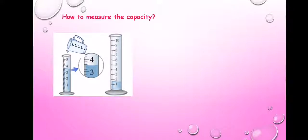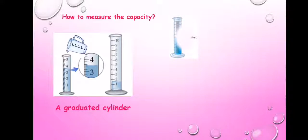The capacity can be measured by using a graduated cylinder. We can fill this graduated cylinder with the liquid and then read the measurement. For example, this graduated cylinder has a liquid inside it — you can see that the marked level is 50 milliliters.